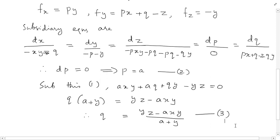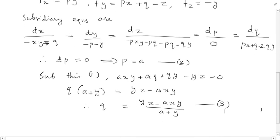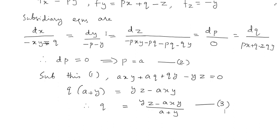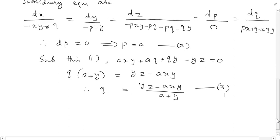We now have p from equation 2 and q from equation 3. The aim after writing subsidiary equations is to find a relationship for p and q, then solve with the given equation to obtain expressions for p and q in terms of x, y, and z.